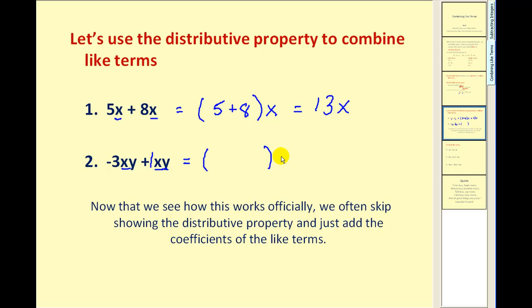So what we can do now is factor out the common variable part of xy and see what's left. Well in this case we are left with negative three plus one, which is negative two. So we have negative two xy.